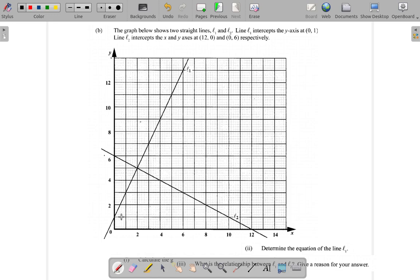It intercepts the y-axis at (0,1). When x is 0 right in the middle here and y is 1, going up. Then L2 intersects the x and y-axis at (12,0) - go out to 12, right here where x equals 12, y equals 0, and (0,6) when x is 0 and y is 6 respectively.